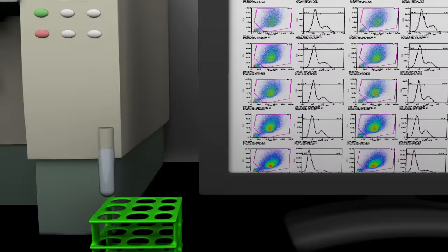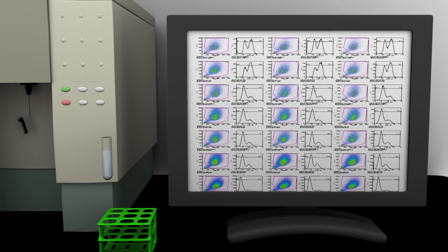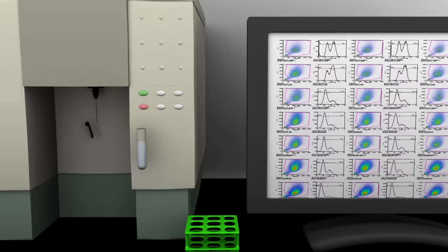Once a suspension of individual cells has been prepared for flow cytometry analysis from cells, tissues, or organisms, the prepared sample is placed on the flow cytometer.